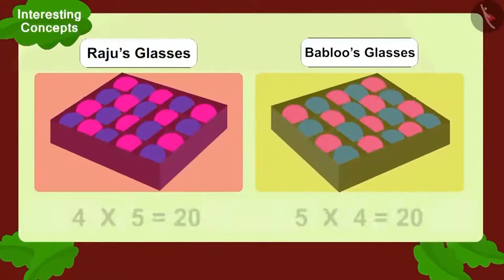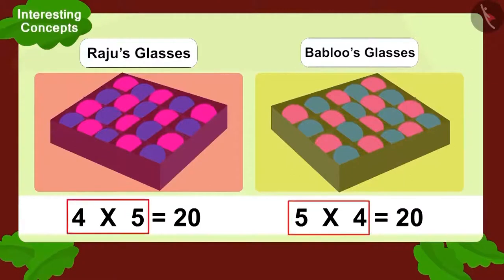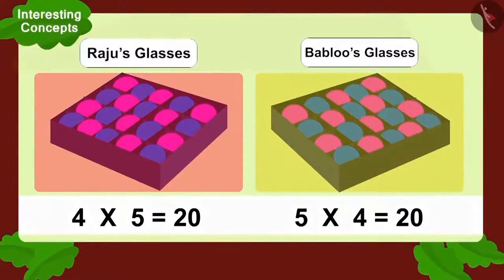The multiplication seen through both Raju and Bablu's glasses were exactly the same. Children, isn't it interesting? We can write any multiplication in two ways like this and its answer will always be the same.